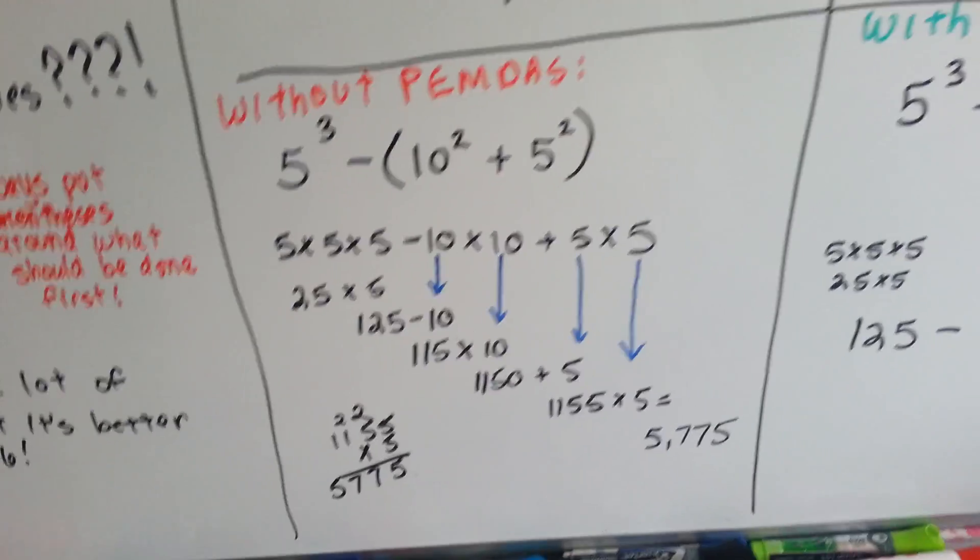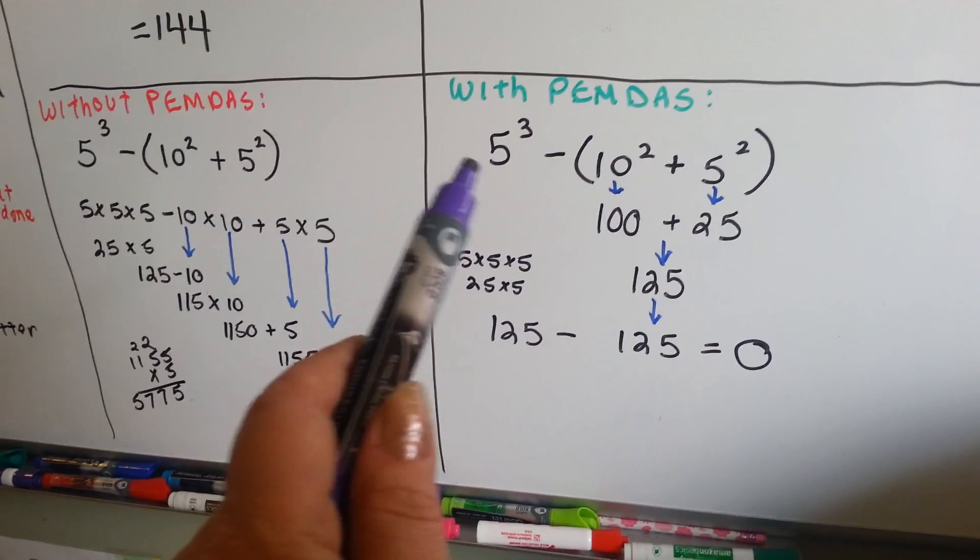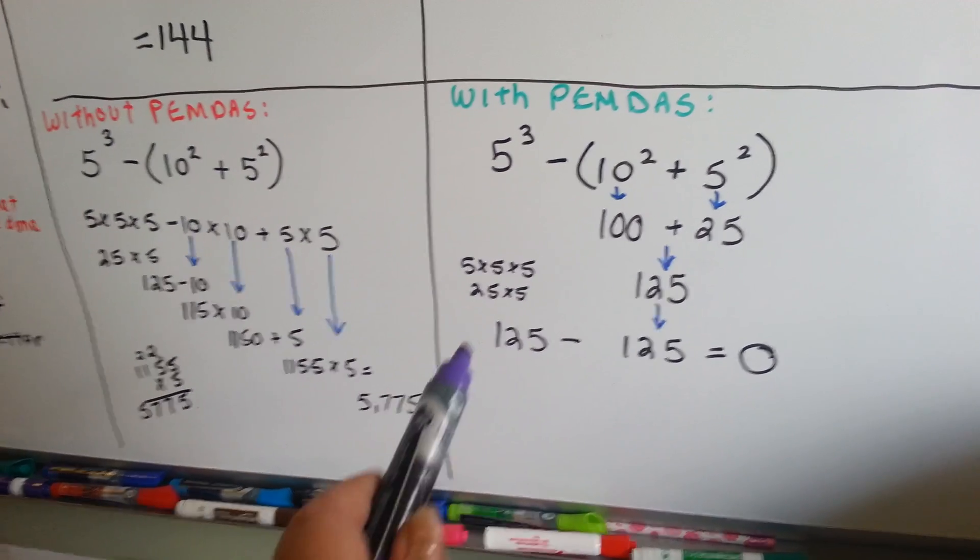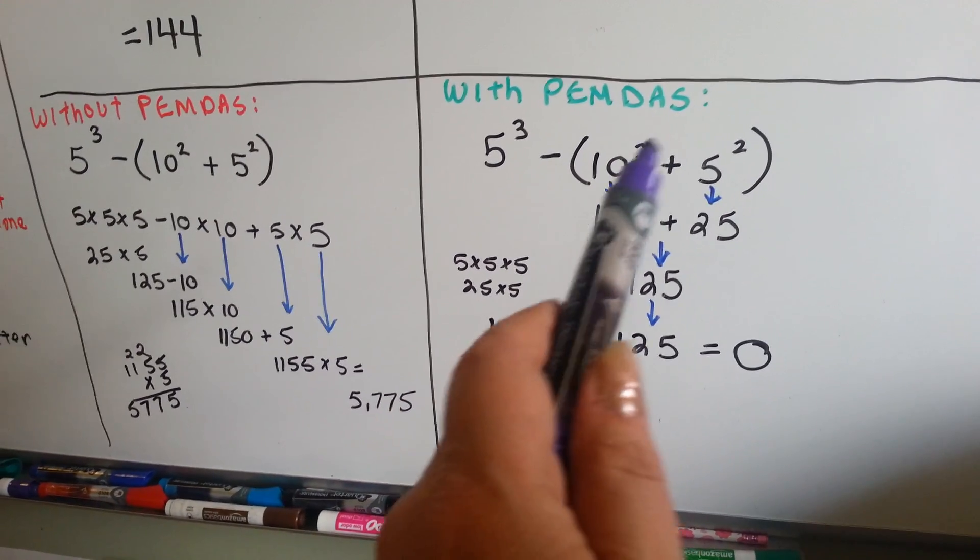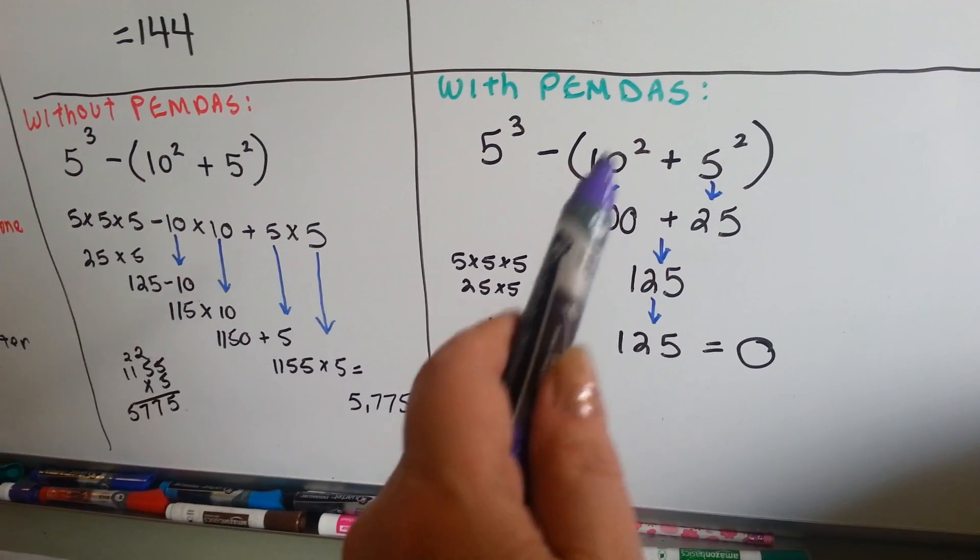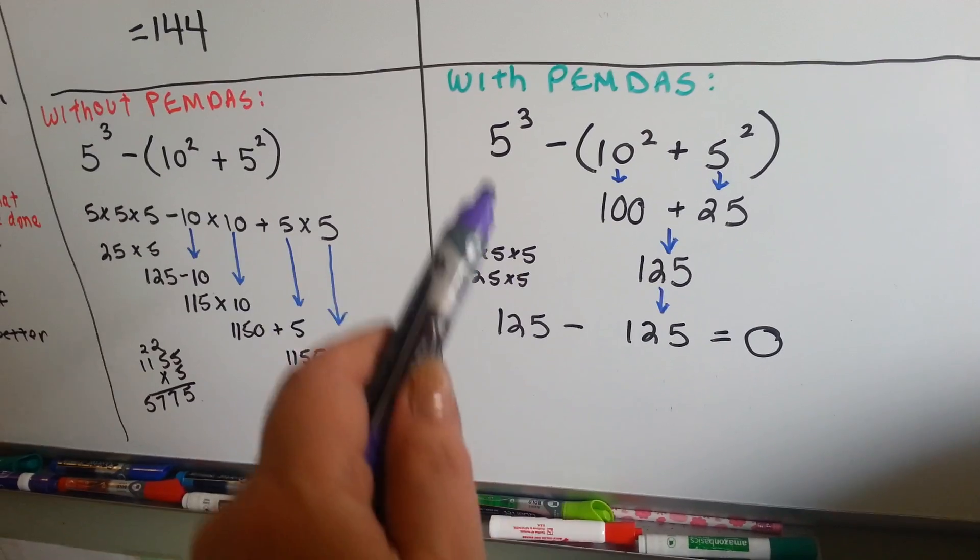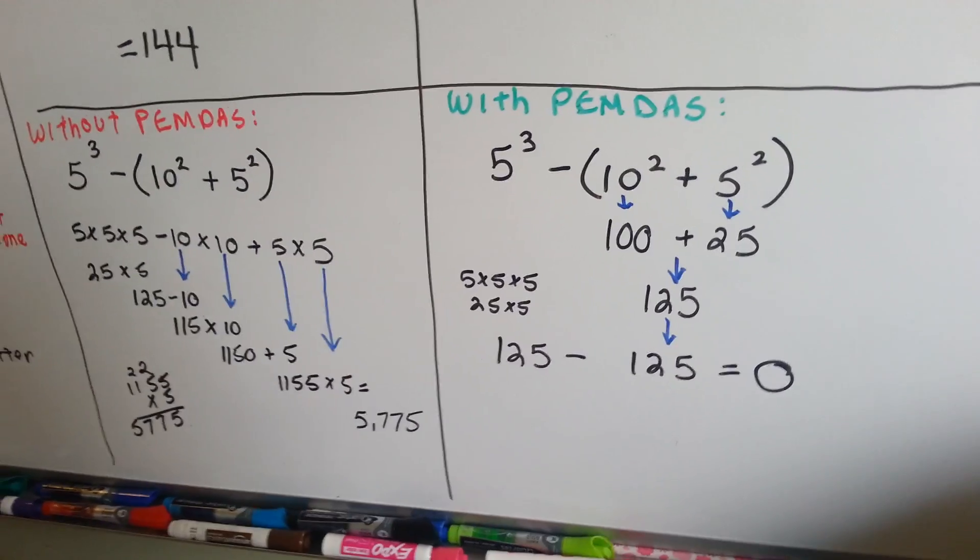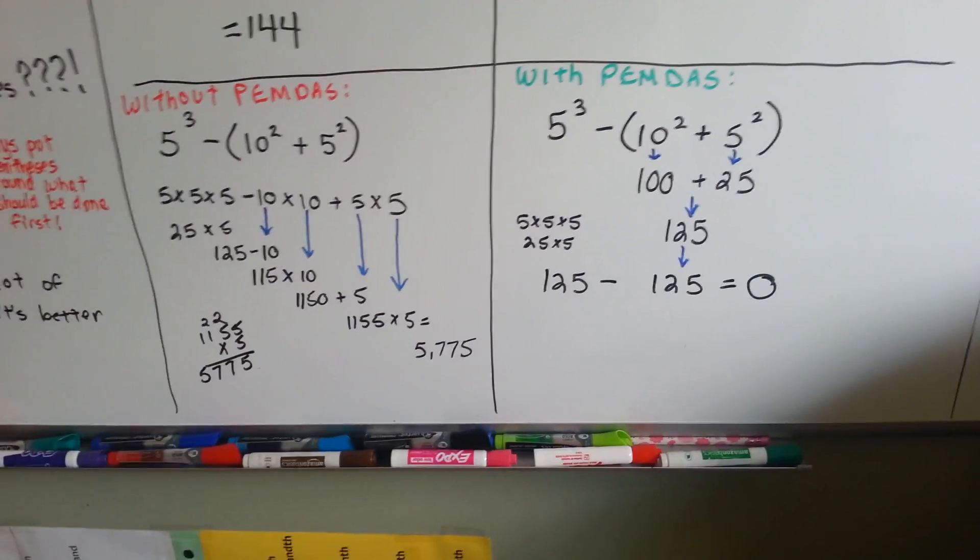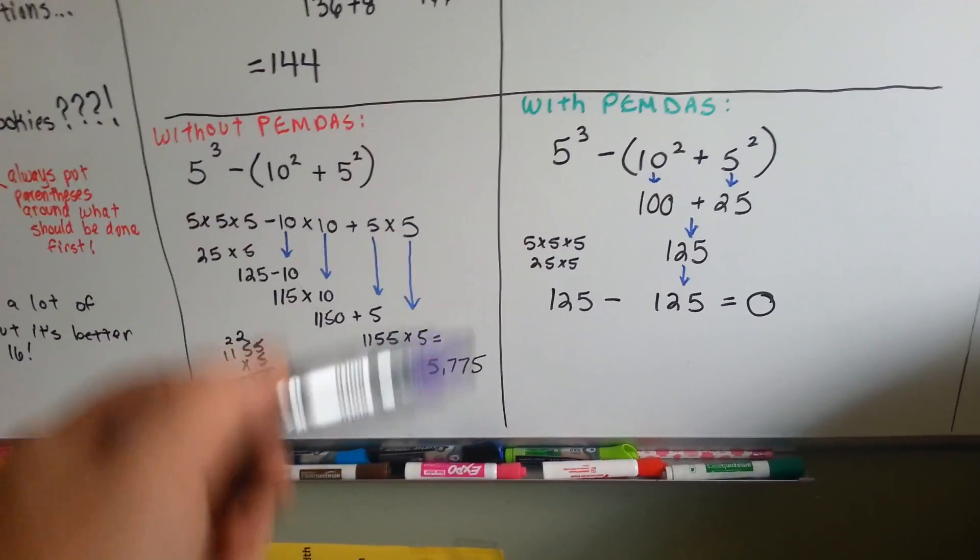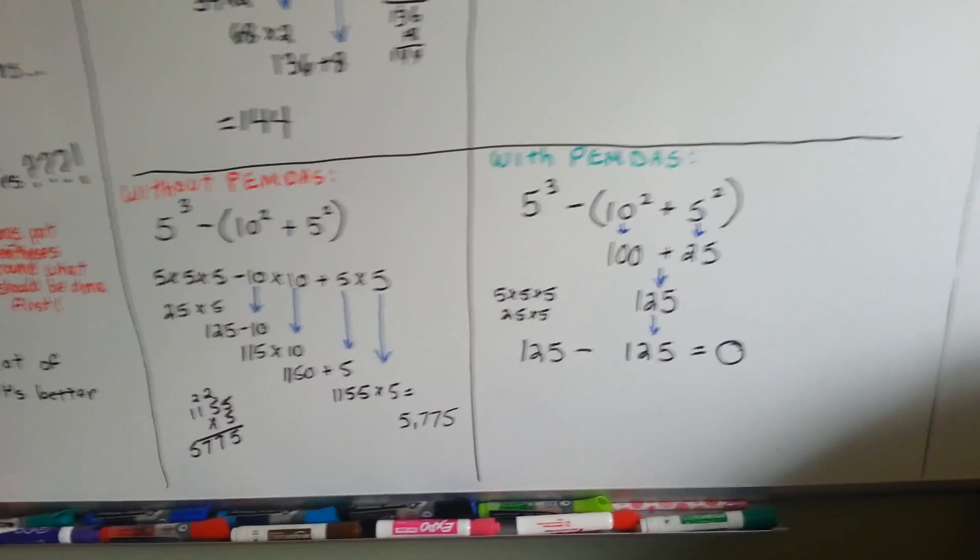Actually, the answer is 0. 5 times 5 times 5 is 125. 10 times 10 is 100. And we do in the parentheses first, 100 plus 5 squared is 25. 100 plus 25 is 125. And we've got 125 minus 125, which is 0. What a huge difference! 5,775? We did it together! That's what happens when you go straight across. Oh my gosh, please use PEMDAS. You'll get everything marked wrong if you don't.